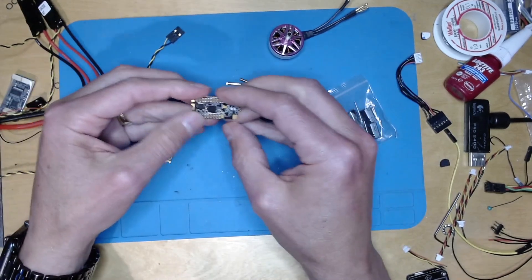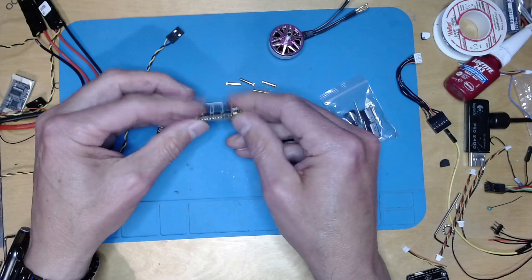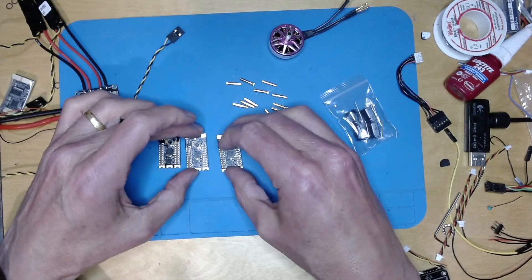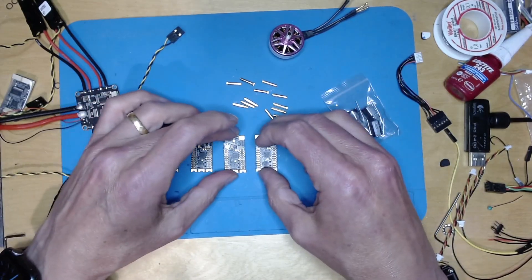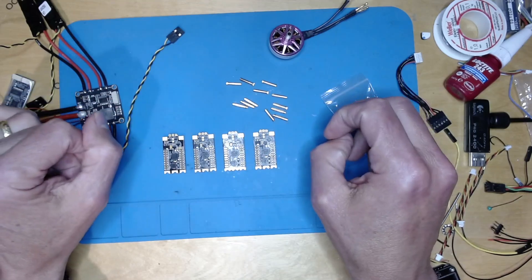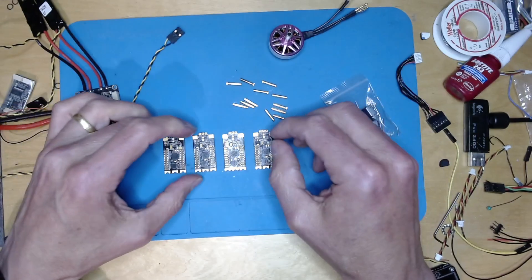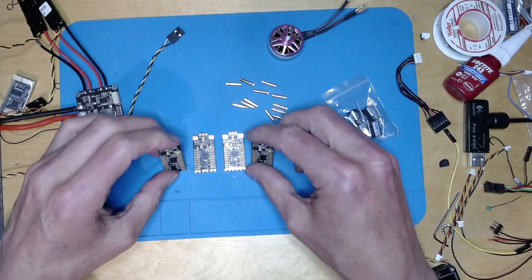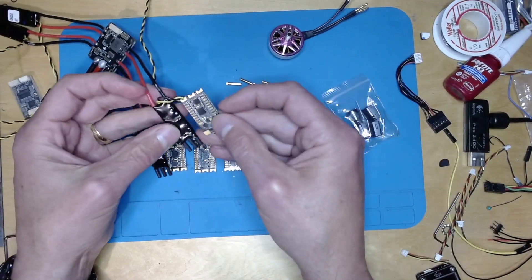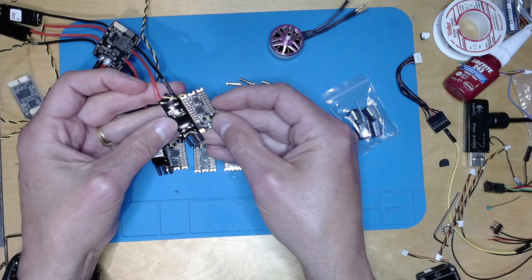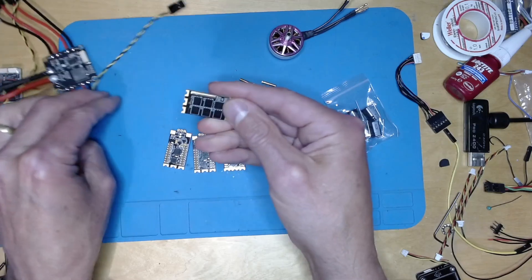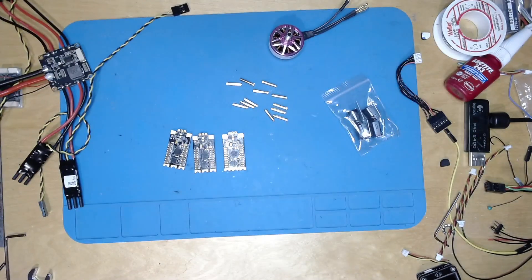So what I'm going to replace these with are some Teco 32 45 amp ESCs. I've got four of these, so I should be able to draw 180 amps total through these constant, probably a bit more burst. I'm going to replace these BL Heli ESCs with these Teco 32. You can see they're a little bit bigger because of the current draw.